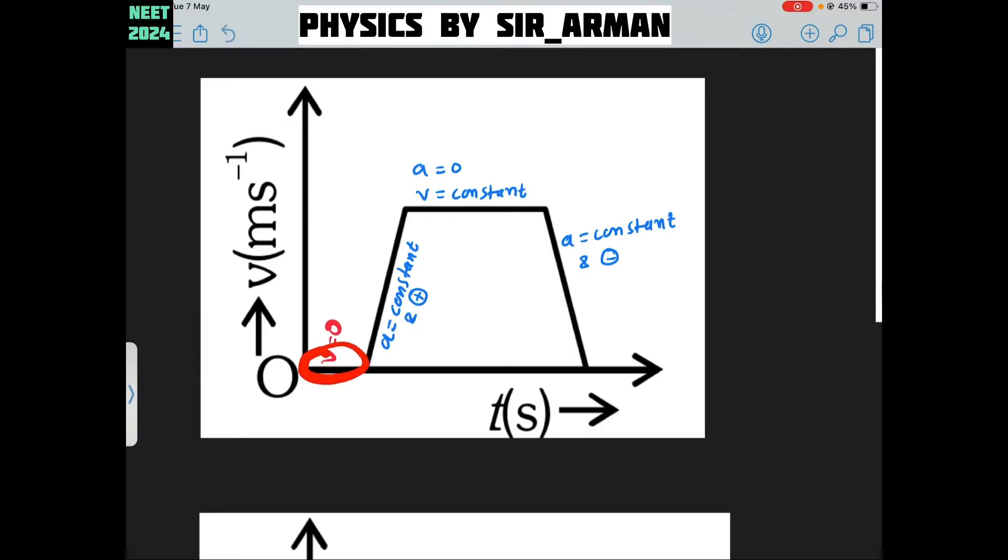Here the velocity is 0. Now, velocity is increasing at a constant rate means acceleration is constant and is positive. Then velocity is constant. Whenever velocity is constant, acceleration is 0. Again, velocity is decreasing at a constant rate means acceleration is uniform. It is constant and negative.